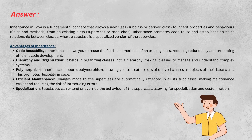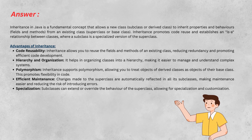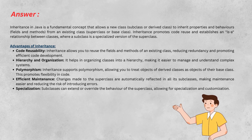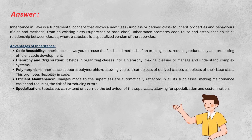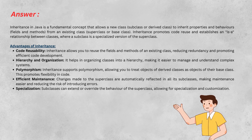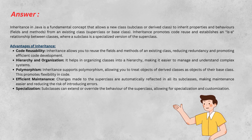Inheritance in Java promotes code reusability, reduces redundancy, and promotes efficient development. Hierarchy organization simplifies management of complex systems. Polymorphism support enables treating derived class objects flexibly. Efficient maintenance means changes to the superclass reflect in all subclasses, easing maintenance. Specialization allows subclasses to extend or override behaviors for customization.